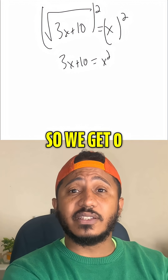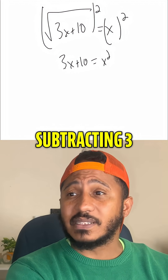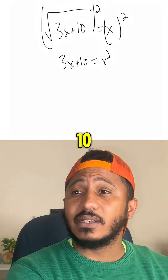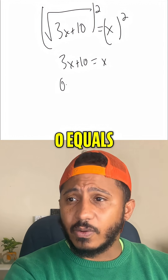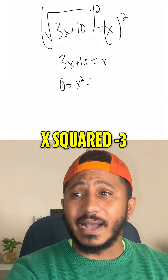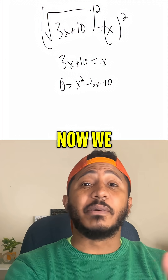Now it's quadratic, so we get zero on one side by subtracting 3x and subtracting 10. So that gives us zero equals x squared minus 3x minus 10.